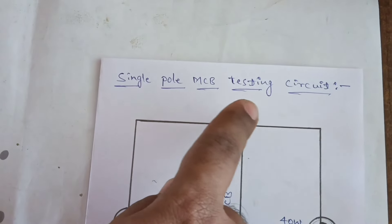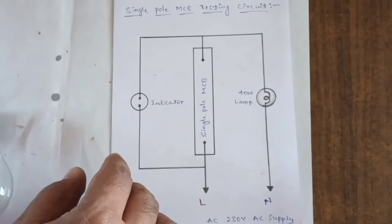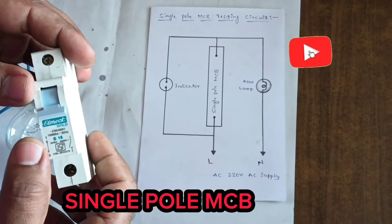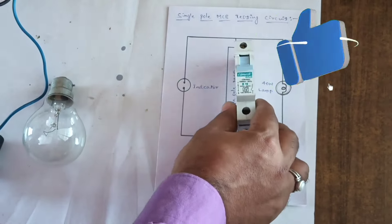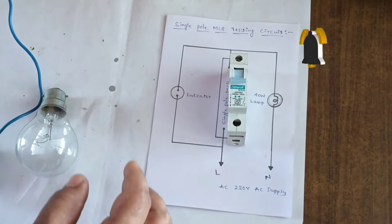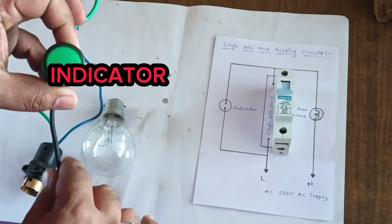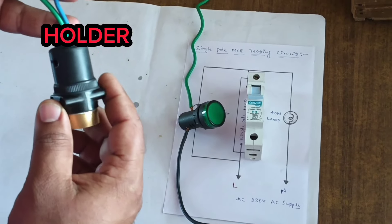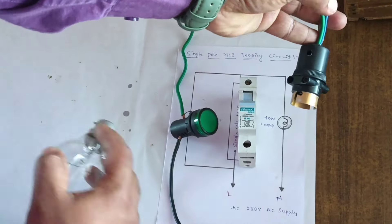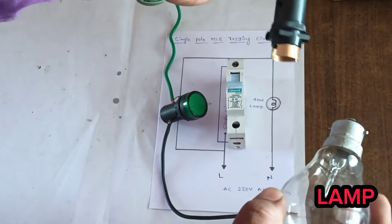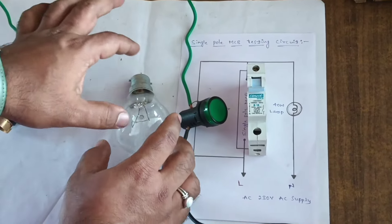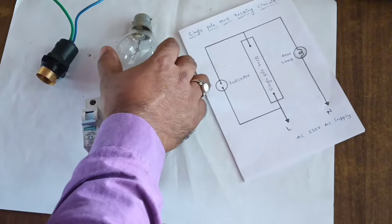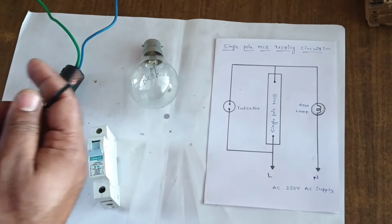Single pole MCB testing circuit using single pole MCB and indicator. Next, holder for lamp and this is the clamp. Take MCB and connect as per the diagram shown.